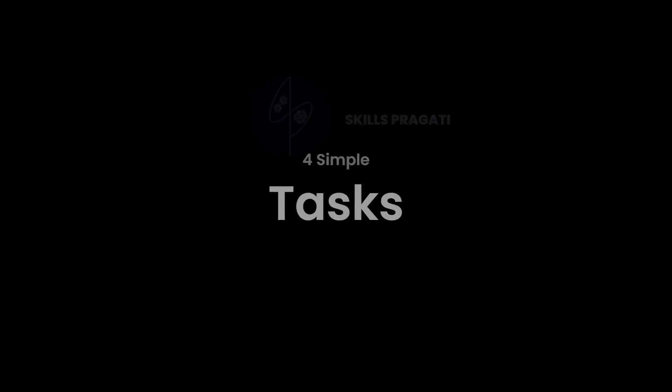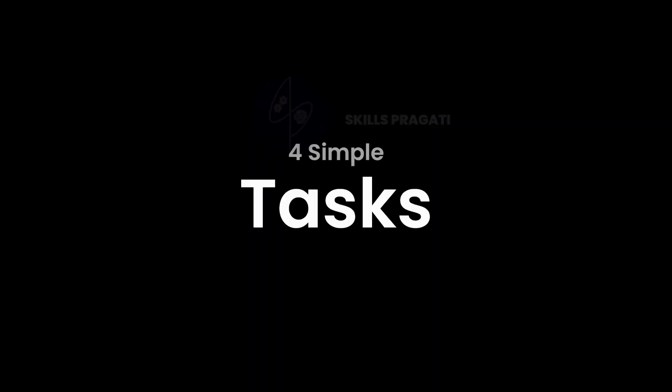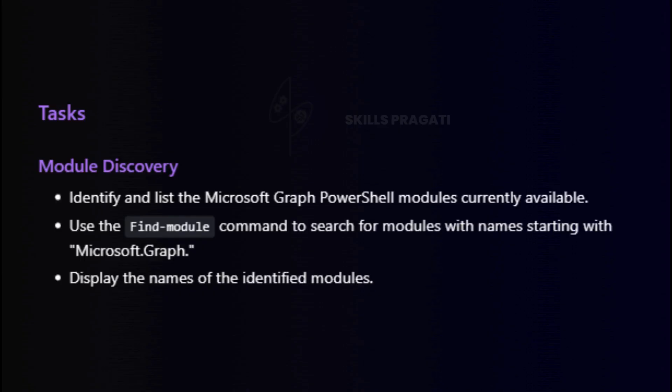In this session, we are going to perform four simple tasks. Task 1: identify and list modules. Our journey begins with the essential task of identifying and listing the Microsoft Graph PowerShell modules currently available. We'll use the find module command, specifically searching for modules with names starting with Microsoft Graph. The result will be a clear display of the identified modules, setting the foundation for further exploration.